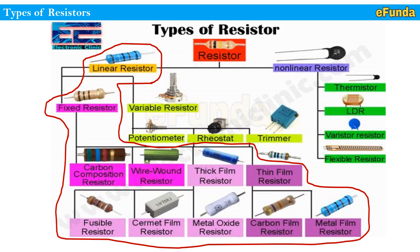Fixed type resistors have fixed resistance values and mostly the fixed resistor values used are in standard ranges of 1 kilohm, 100 ohm, 10 kilohm, and 330 ohm. Further, the fixed resistors are divided into carbon composition resistor, wire wound resistor, thick film resistor, and thin film resistor. The thick film resistors are further divided into fusible resistor, cermet film resistor, and metal oxide. The thin film resistor is further divided into carbon film resistor and metal film resistor.